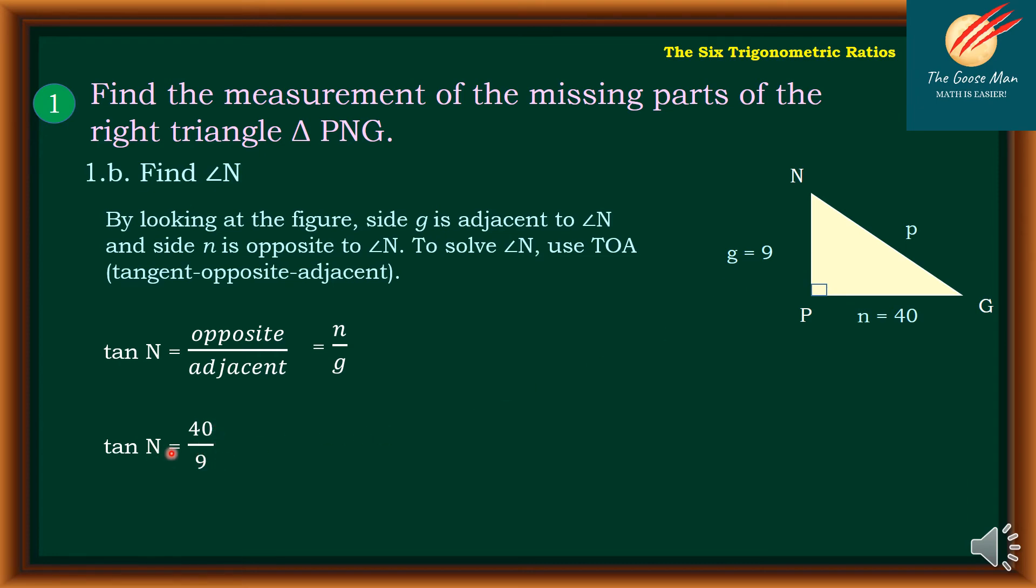But I'm looking for the value of N. So that is why I'll press the arctan or tangent raised to negative 1 in our scientific calculator. Open and close parenthesis 40 over 9. So using our scientific calculator, N = 77.31961651. Or the value of N = 77°19'10.62" using our scientific calculator.